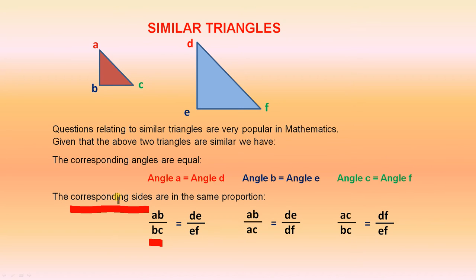So that's what it means when we say that the corresponding sides are in the same proportion. That when you simplify both of these fractions to the lowest form, they are the same. They have the same value. Let's look at some other sides.